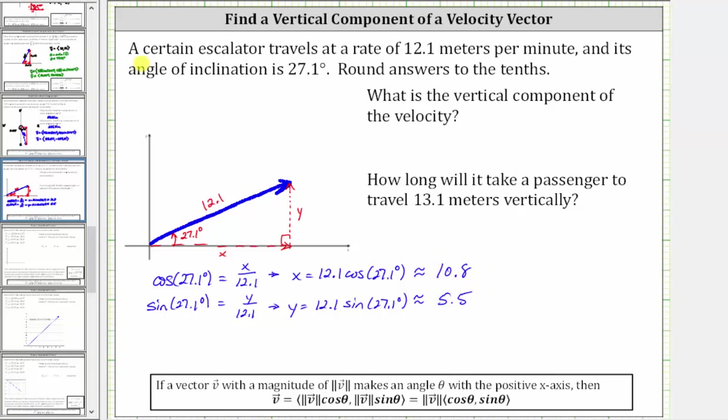Now that we have the approximate components, let's discuss what this means. The horizontal x component of 10.8 indicates the escalator is traveling at a rate of 10.8 meters per minute horizontally, and the vertical or y component of 5.5 indicates the escalator is traveling vertically or up at a rate of 5.5 meters per minute.